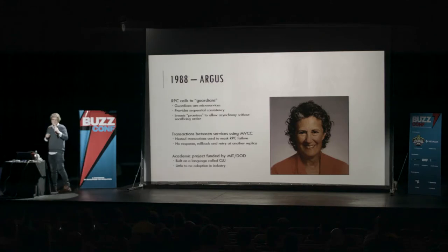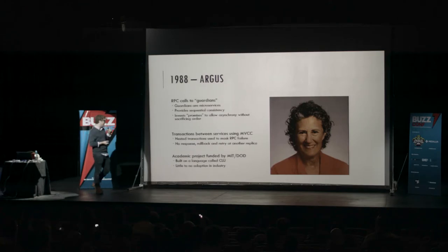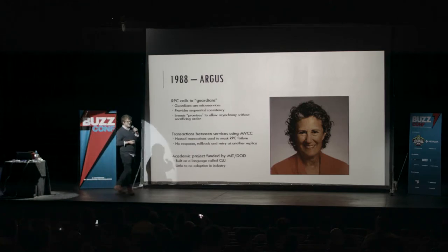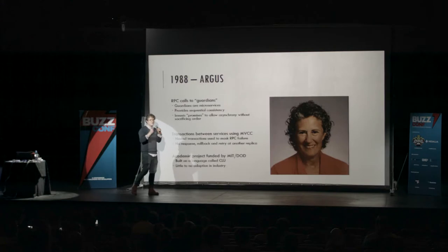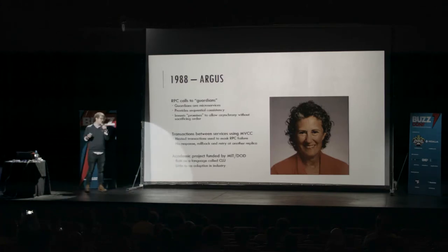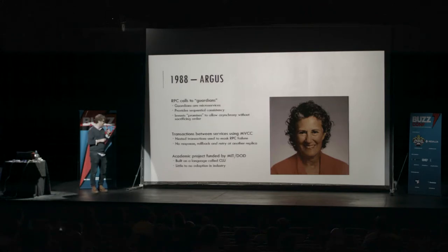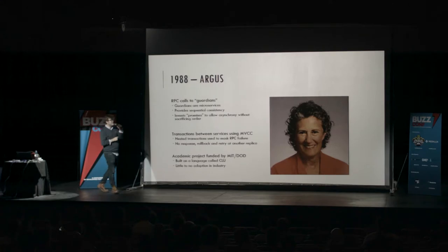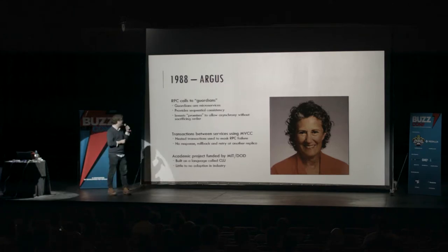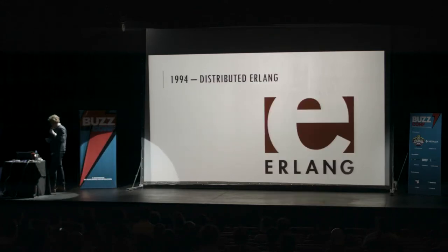The way she deals with atomically changing state is using a transaction protocol across guardians. This can mask omission failures and RPC failures using nested transactions with multiversion concurrency control. Unfortunately, the system has no adoption. Turns out promises — really good idea, everybody uses them now. Nested transactions with multiversion concurrency control together — really bad idea, nobody ever wants to touch it again. As a side note, the language Argus was built on is the source of iterators in Ruby, and the X-Windows system was designed as a graphical debugger for Argus.